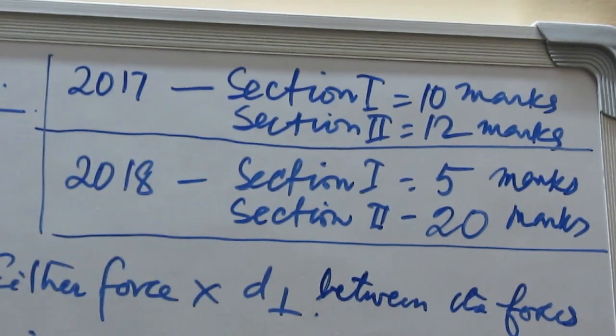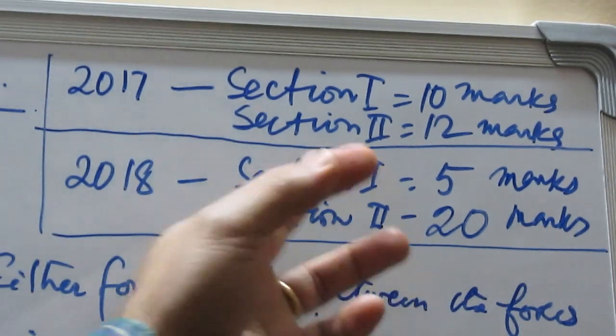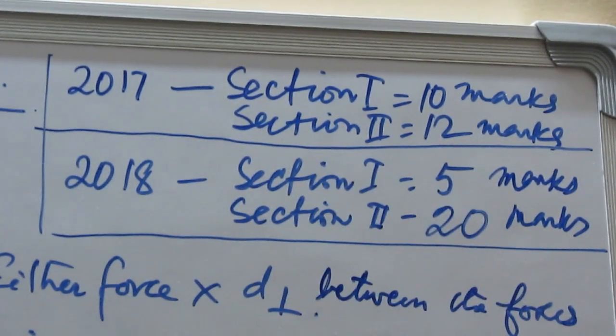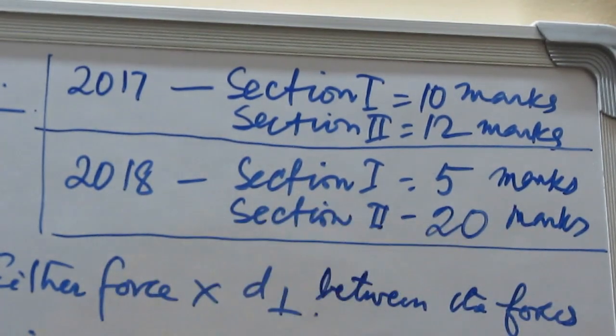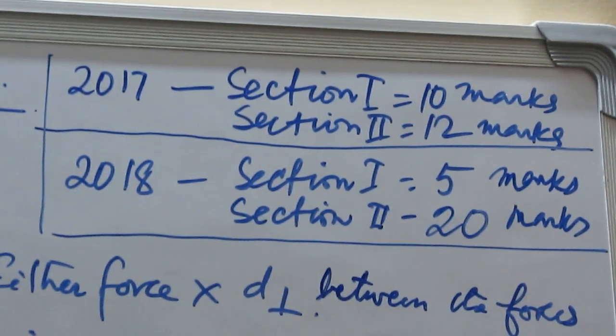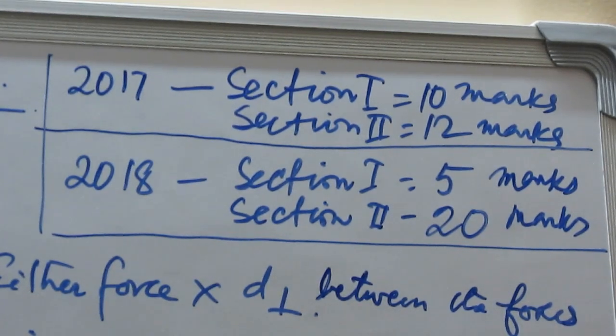In 2018, we are looking at the paper. In section 1, there were 5 marks, and in section 2, there were 20 marks. So question number 5, 6, 7, 8, 9 were 4 marks each. We have given the question marks.